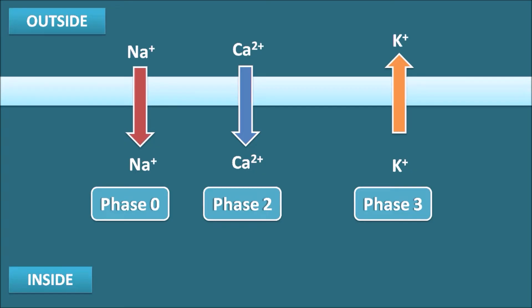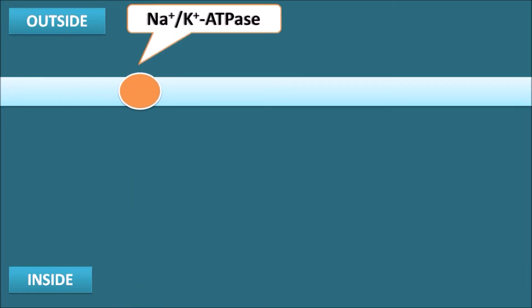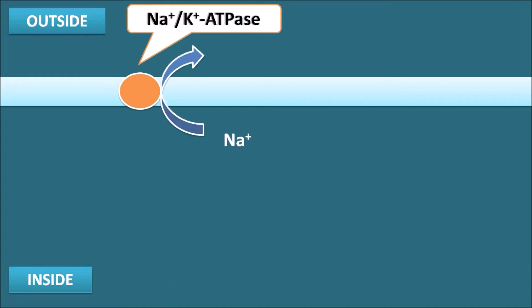At the same time, while restoring these ionic levels, the membrane potential should not change. This is carried out by specialized electro-neutral pumps. One such pump on the cardiac membrane is the sodium-potassium ATPase pump. This pump transports sodium — which entered during Phase 0 — back outside the membrane, while bringing potassium from outside into the membrane, restoring potassium levels without any change in membrane potential.